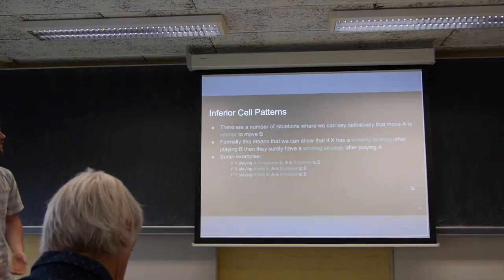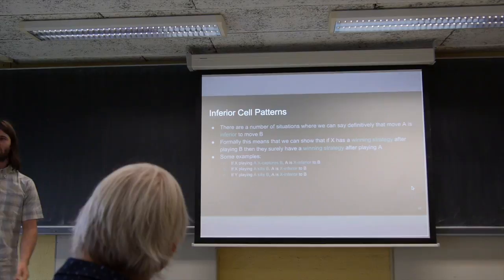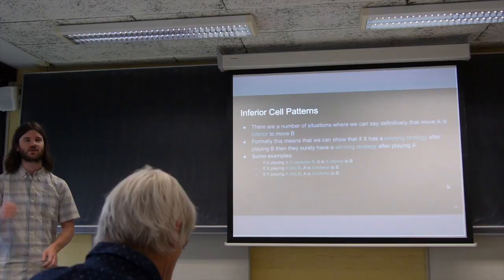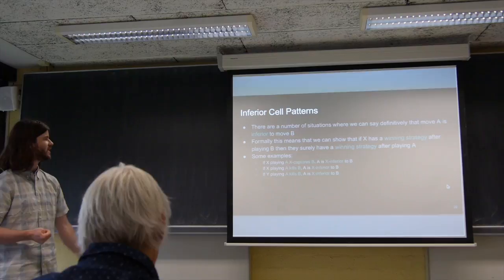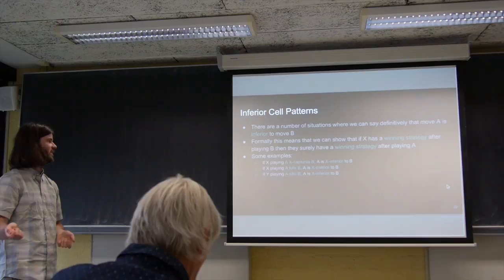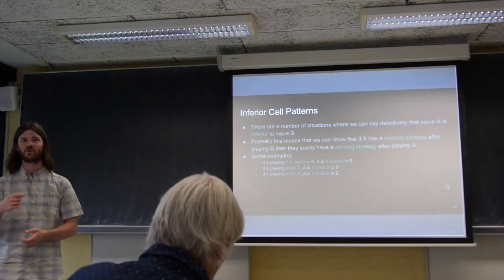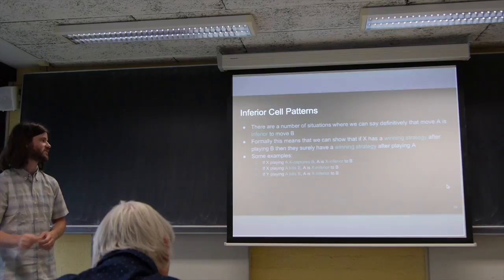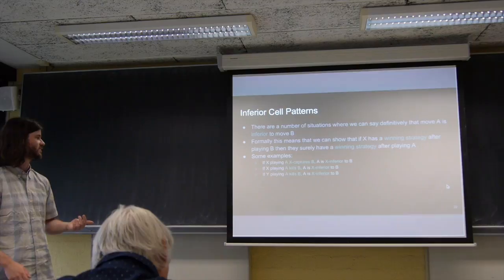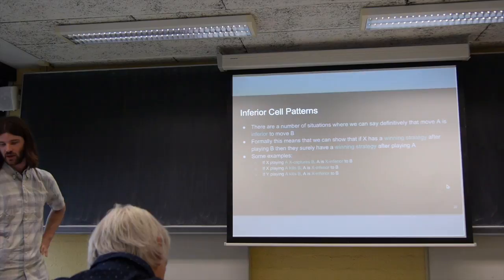So the last thing and one of the really important things for our solver is inferior cell patterns. These are just ways we can prove that a particular cell on a board is inferior to another move. So say A is inferior to B. And this means that if X has a winning strategy where they should play B, then they must also have a winning strategy after playing A. So there's a number of situations where we can prove this. Some examples, if A captures B, then A is inferior to B. And this is basically because by playing A instead of B, you'd be capturing an even set of cells. Which means overall we've now gained one cell plus two additional cells. And we've already proved that gaining two additional cells is bad. So why not just play one of the captured sets and avoid capturing the other two? And then some more examples, A kills B, similarly A is actually superior to B. And also, well yeah, sorry, A kills B for either player. It's inferior to B for both players.